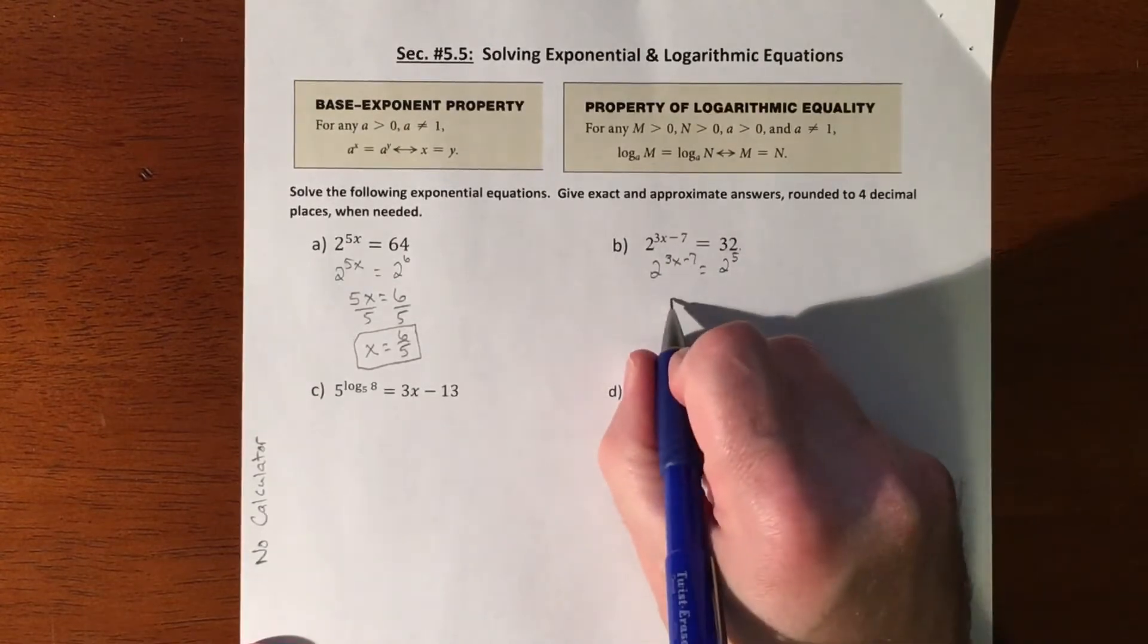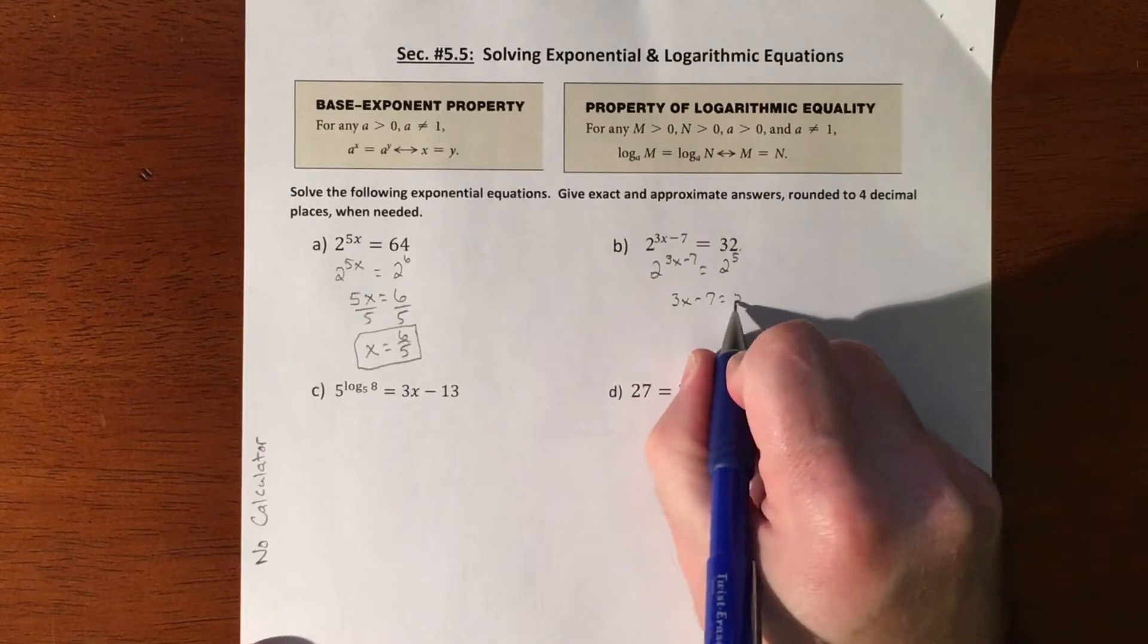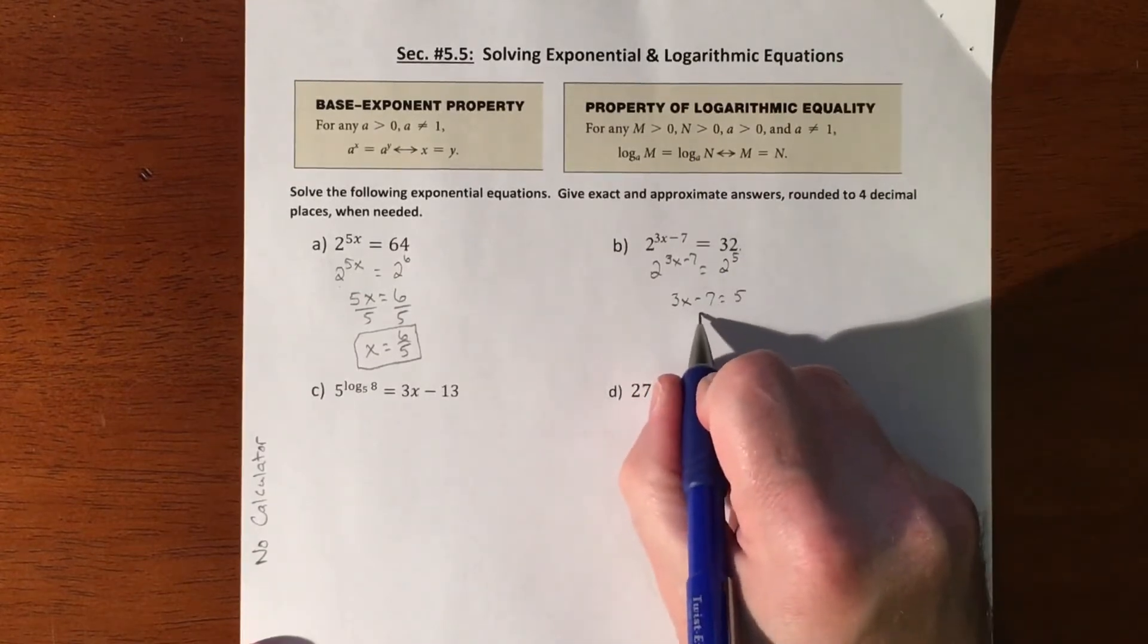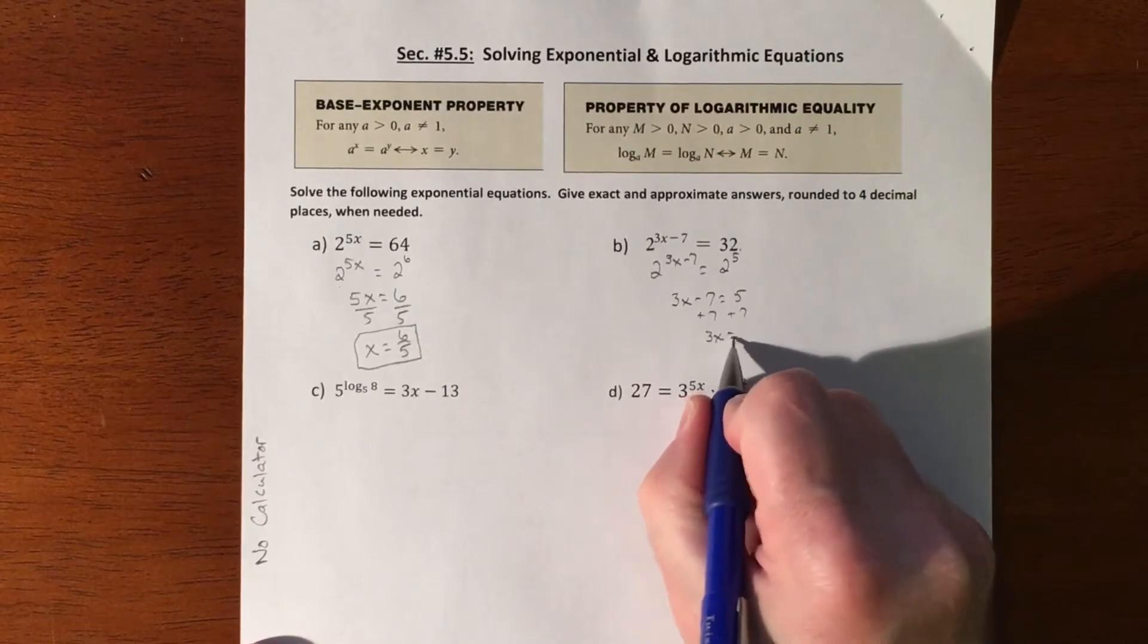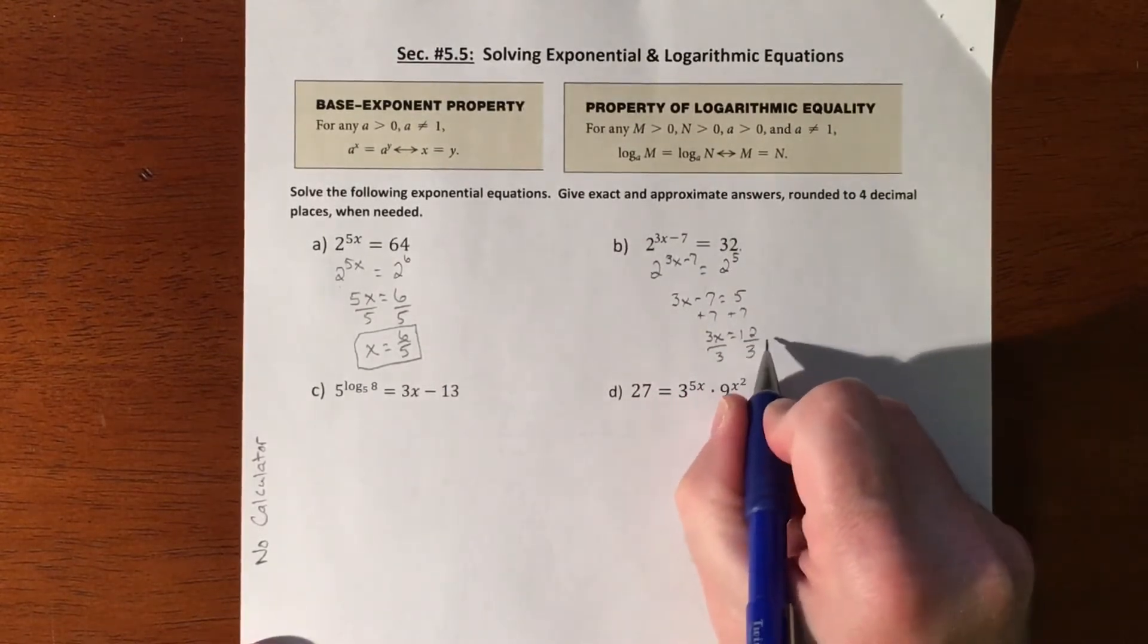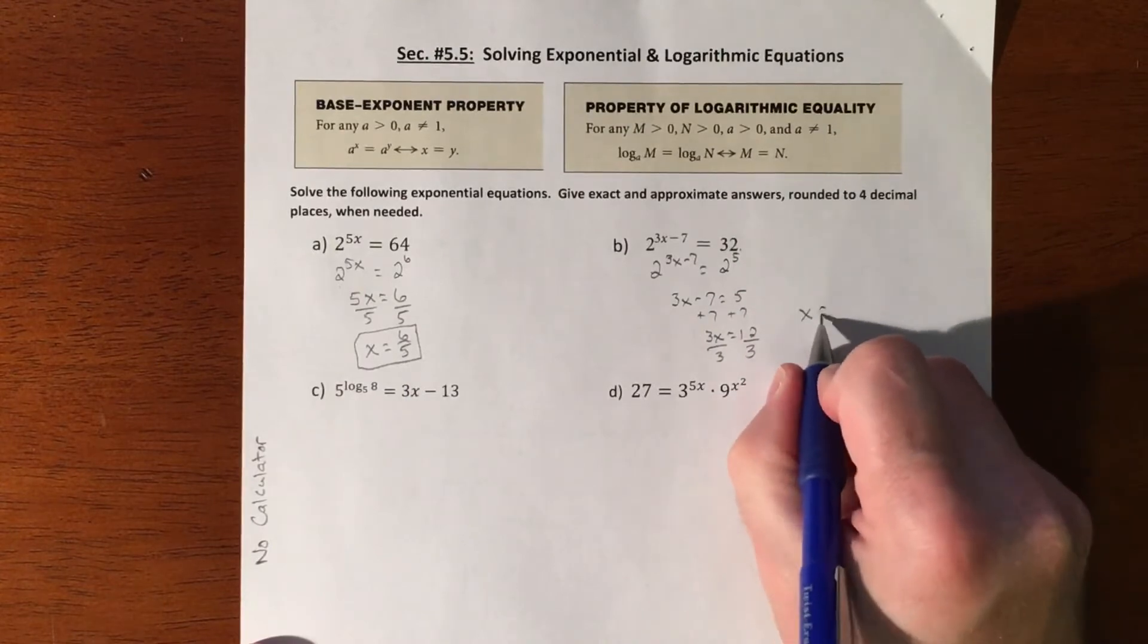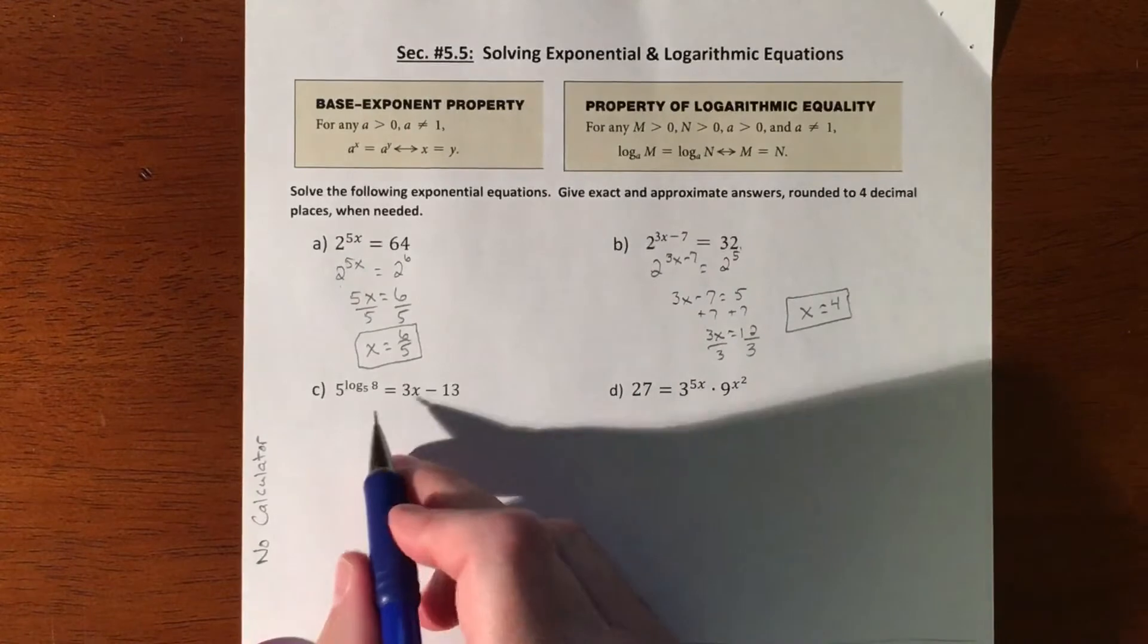And then if the bases match, you can drop the bases and you're just focusing on 3x minus 7 equaling 5. And then we add 7, 3x equals 12, divided by 3, and x is going to equal 4.